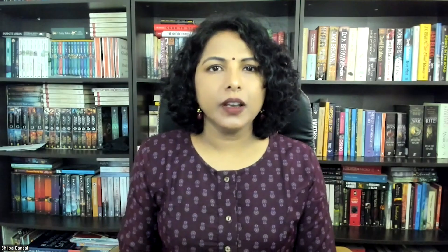Urdhva Tiryagbhyam. So let's start with the first method which is Urdhva Tiryagbhyam, which is also called as the universal method. Now why is it called a universal method? Because you can multiply any two-digit random number with any other two-digit random number. There are no constraints. And the best part about this method is you don't need to write steps like what you do in your traditional method. You can simply get your answer from left to right. So Urdhva Tiryagbhyam simply means vertically and diagonally, crosswise.